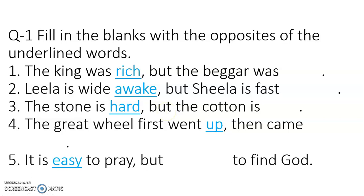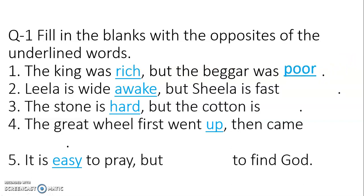Now we are going to do an exercise based on antonyms or opposites. Question number one: fill in the blanks with the opposites of the underlined words. These words are underlined and highlighted in blue. The first sentence is: the king was rich but the beggar was ___. The opposite of rich is poor. The king was rich but the beggar was poor.